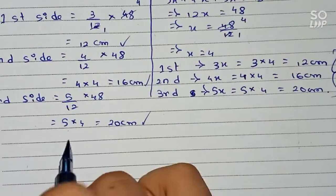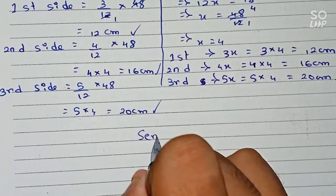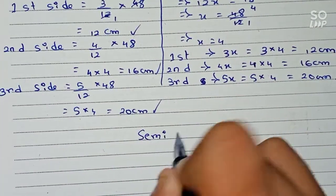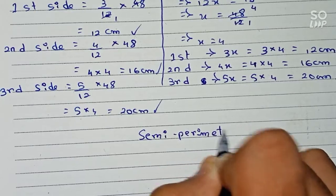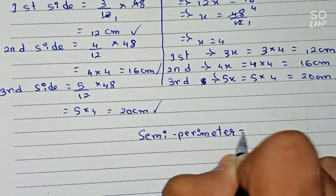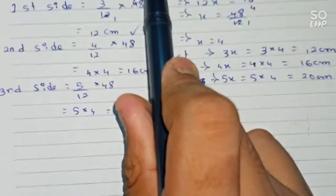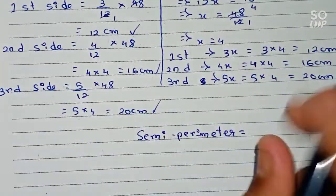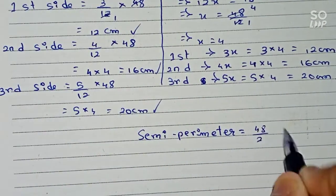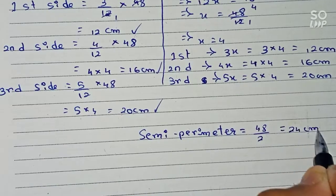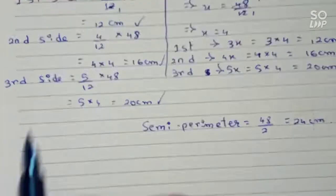Now we find the area. First, I find the semi-perimeter. Semi-perimeter equals the perimeter divided by 2, so 48 ÷ 2 = 24 centimeters. Now I use Heron's formula to find the area.